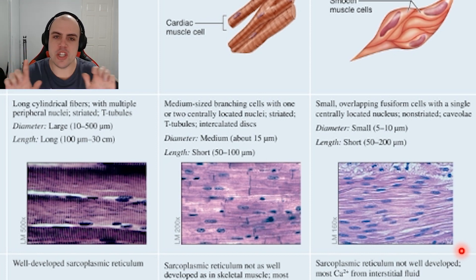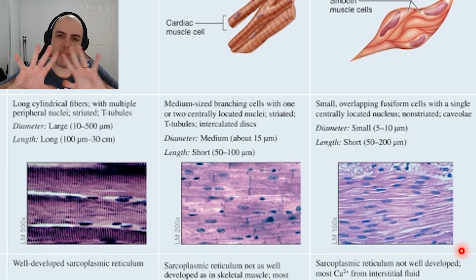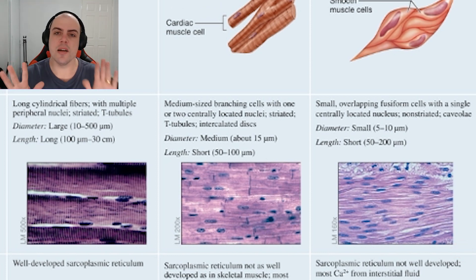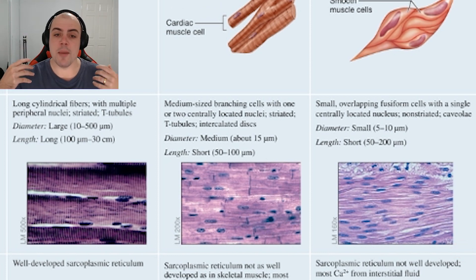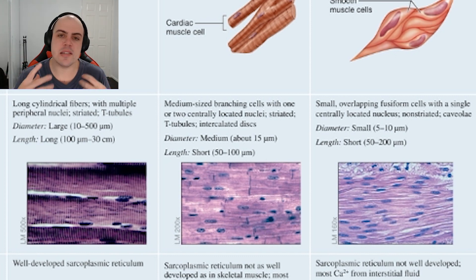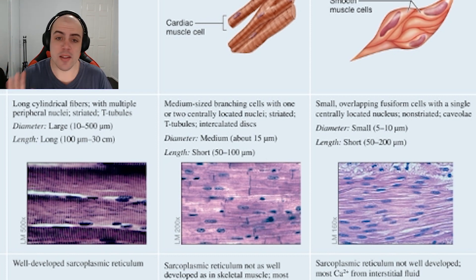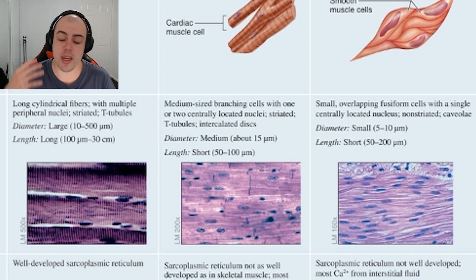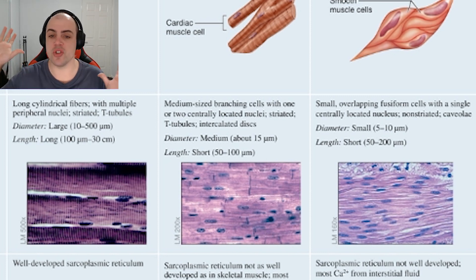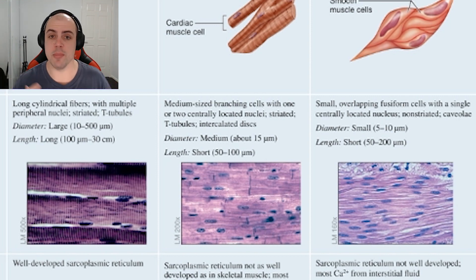Cardiomyocytes are branching strands that overlap each other, similar to bamboo. They also have a very unique intracellular composition — they contain around 20% more mitochondria than any other cell. This is simply because the heart is constantly contracting and relaxing, meaning it needs a very reliable source of energy.